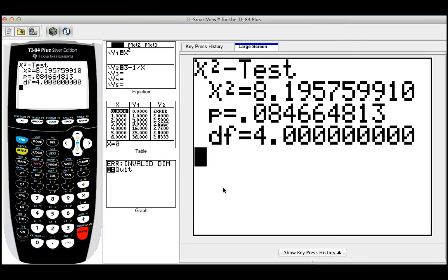Well, we're going to put calculate. Voila! We get the test statistics, which is 8.1957, and we get the p-value.